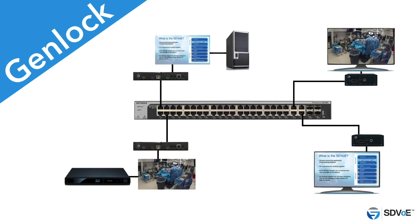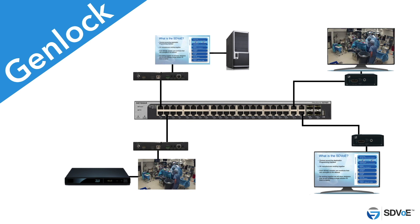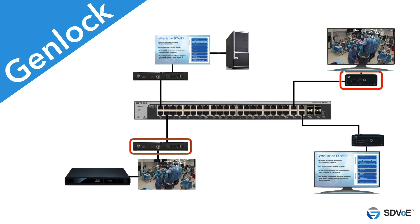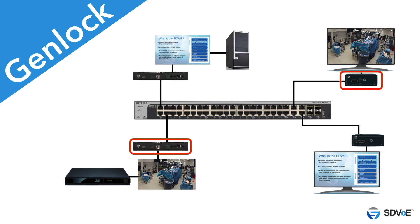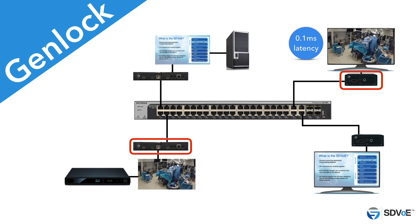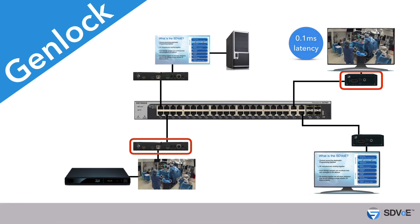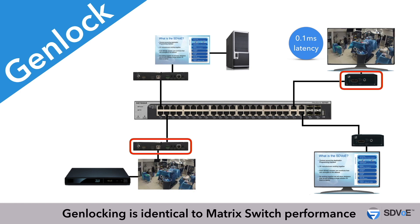Let's begin with the genlock mode. Mission critical applications such as operating theatres or the live streaming of an event require genlocking. The genlock mode ensures that the source connected to the transmitter outputs the exact resolution to the receiver connected to the display. The total latency from source to display in genlock mode is 0.1 milliseconds, which is actually the same as your matrix switch. This is exactly what we mean by the matrix transformed — identical performance but on a flexible, cost-effective Ethernet backbone.